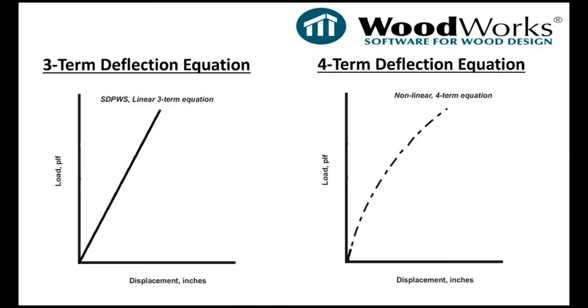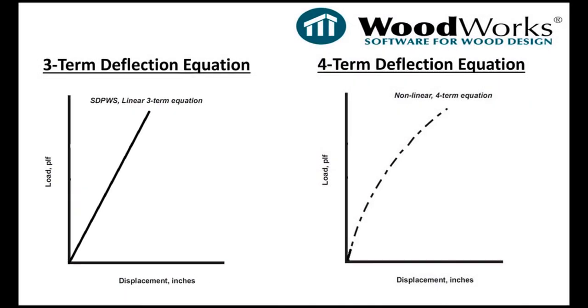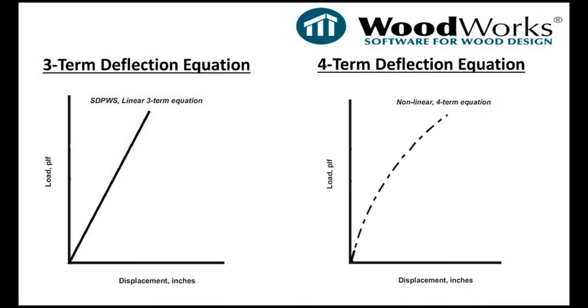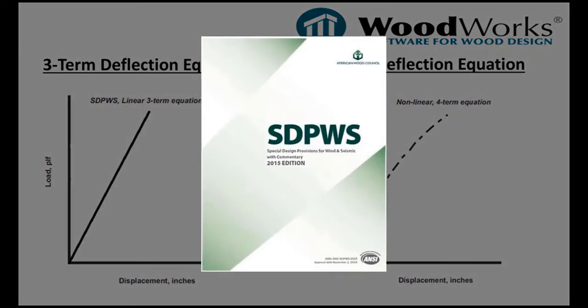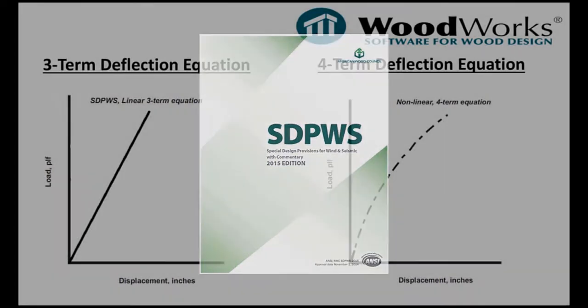Inside the shearwall software, there is an option to use either the three-term deflection equation or the four-term deflection equation. The three-term deflection equation has been adapted from the American Wood Council's special design provision for wind and seismic standard, commonly known as SDPWS.